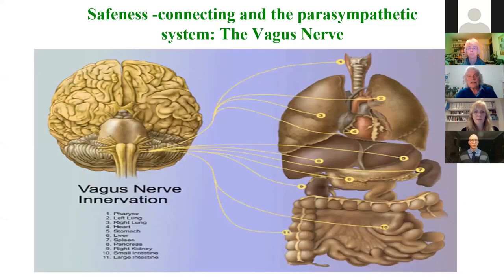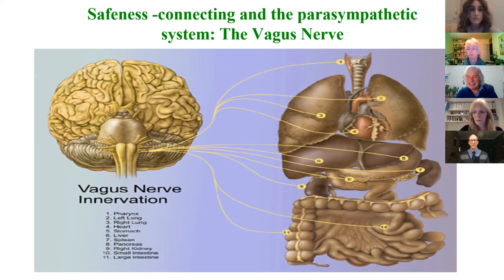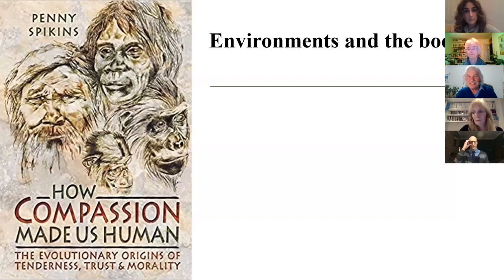We also know that the vagus nerve, which is part of the autonomic nervous system, is very important for well-being, for pro-social behavior, for caring behavior. And this system is not always highly stimulated in competitive societies. In fact, it tends to get subdued in competitive societies.